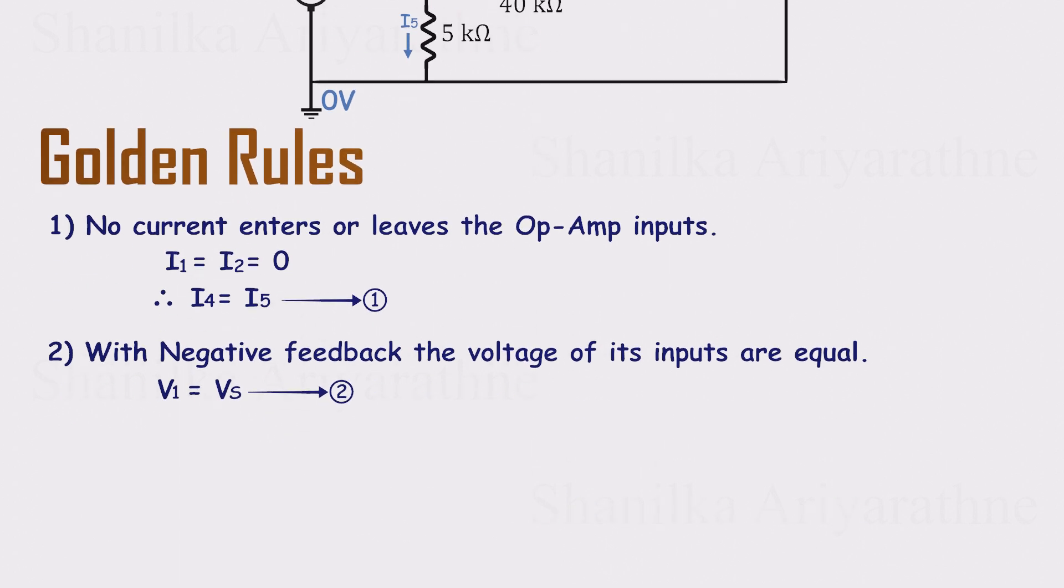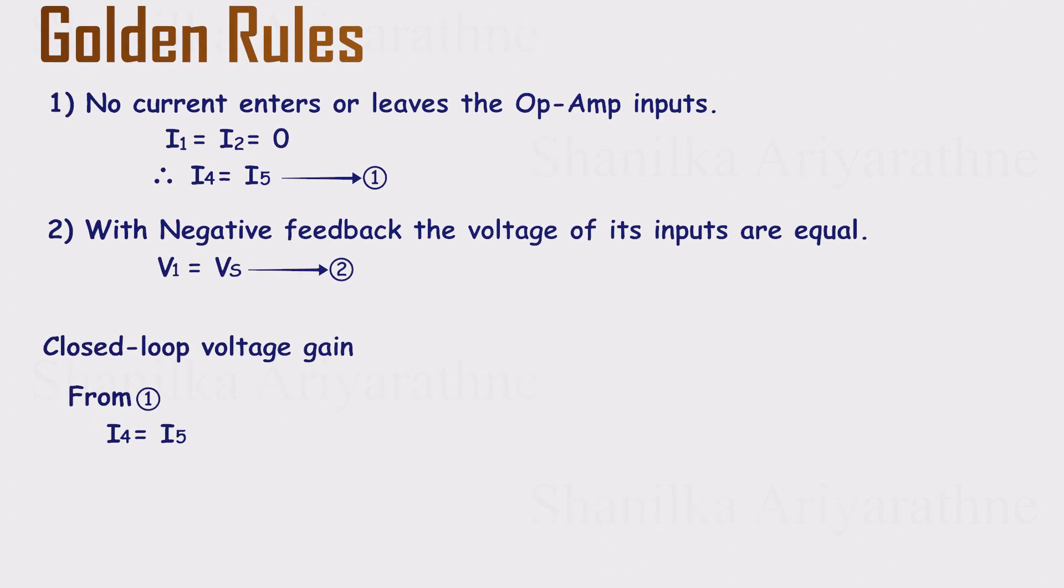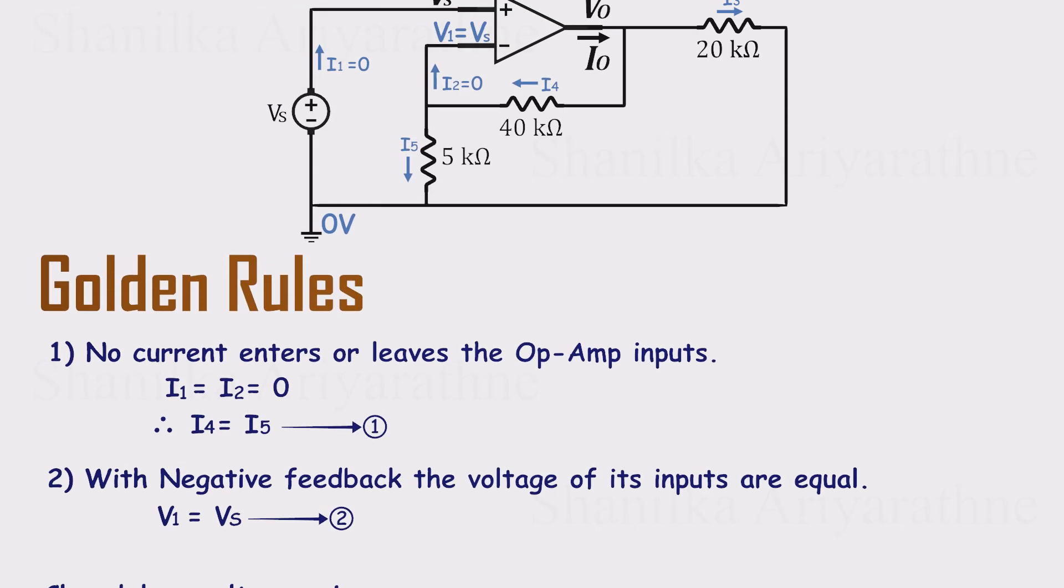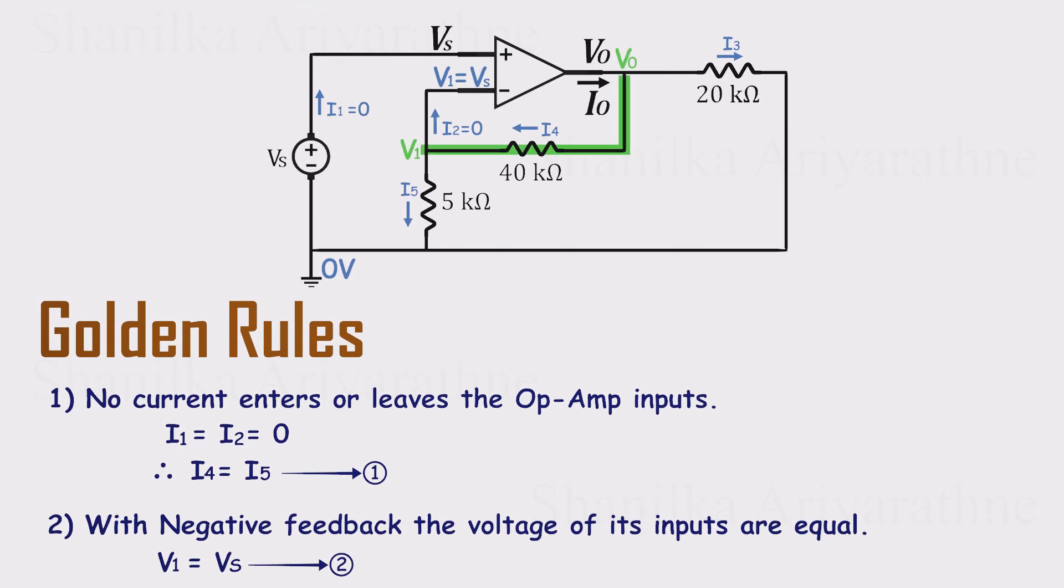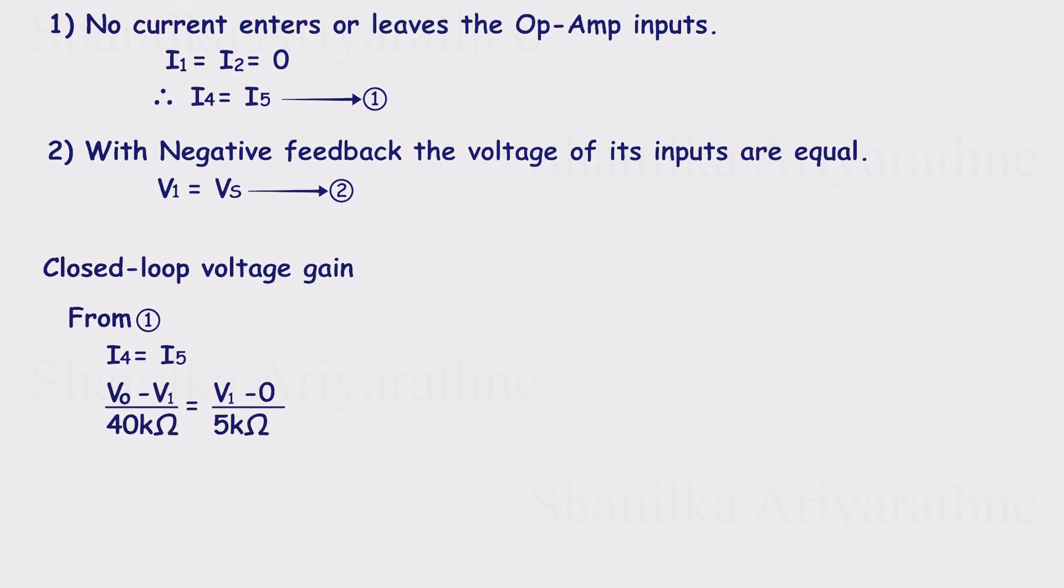With those relationships in place, we can now calculate the gain. Let's start with the first one, I4 equals I5. Looking at the circuit, I4 is the current through the 40 kiloohm resistor. By Ohm's law, current is just the voltage difference across the resistor divided by its resistance. So I4 equals VO minus V1 over 40k. Similarly, I5 is the current through the 5 kiloohm resistor. That's V1 minus 0 over 5k. Since I4 and I5 are equal, we can set those two expressions equal to each other. Solving gives us VO equals 9 times V1.